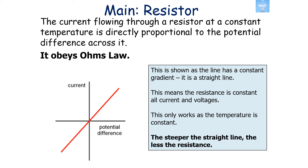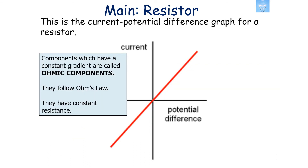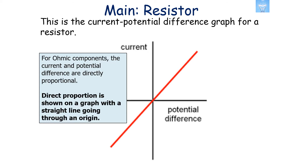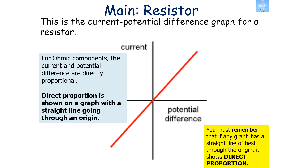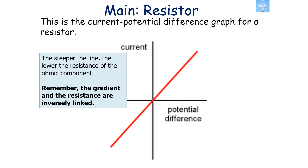This only works when the temperature is constant. The steeper the straight line, the smaller the resistance. Components with a constant gradient are called Ohmic components — they follow Ohm's law and have a constant resistance, meaning current and potential difference are directly proportional. This is shown on a graph as a straight line through the origin. Remember, any graph with a straight line of best fit through the origin means the x and y values are in direct proportion. Ohmic components will produce a curving line if temperature changes, because resistance would then change.